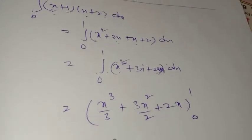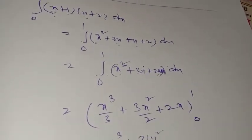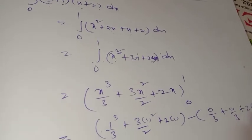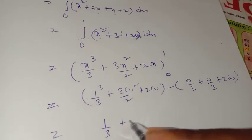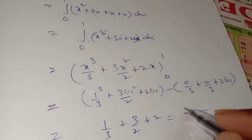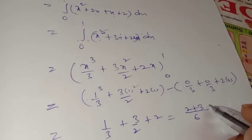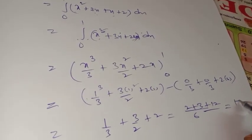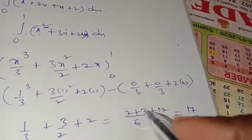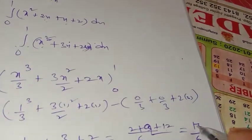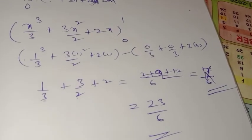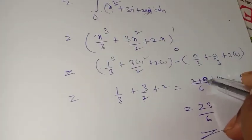Substituting the upper limit: 1 cubed by 3 plus 3 times 1 squared by 2 plus 2 times 1, minus lower limit: 0 by 3 plus 3 times 0 squared by 2 plus 2 times 0. That equals 1/3 plus 3/2 plus 2. Taking LCM 6: 2 plus 9 plus 12 over 6. That equals 23/6, which is the answer.